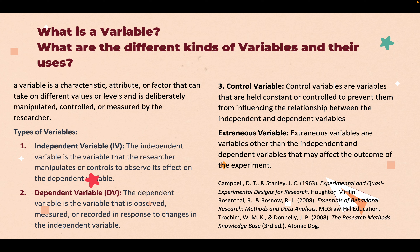Variables are fundamental to the experimental process, as they are used to investigate cause-and-effect relationships, test hypotheses, and understand how changes in one variable may impact another variable. The types of variables include: independent variable (IV), dependent variable (DV), control variable, and extraneous variable.